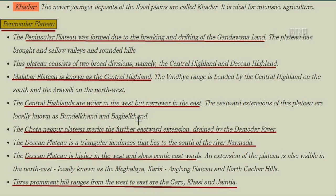The Chhota Nagpur Plateau marks the further eastward extension, drained by the Damodar River. The Deccan Plateau is a triangular landmass lying to the south of the River Narmada. It is higher in the west and slopes gently towards the east. An extension of this plateau is also visible in the north-east, locally known as the Meghalaya Plateau.